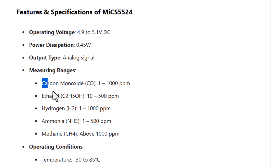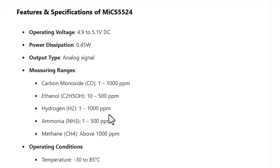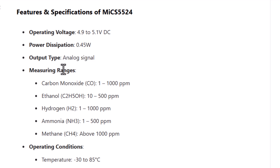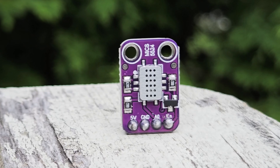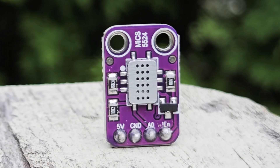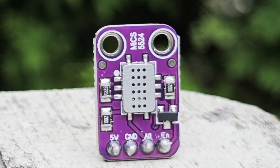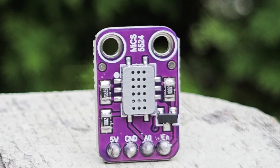Here is the list of measuring ranges for different gases. It measures the gas concentration using the analog output. It has 4 pins which are VCC, GND, enable pin, and analog output pin.